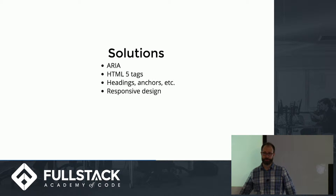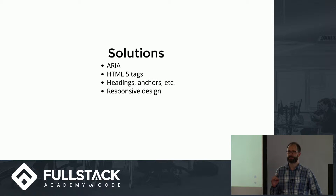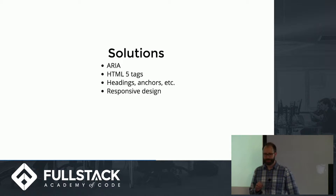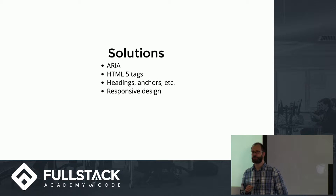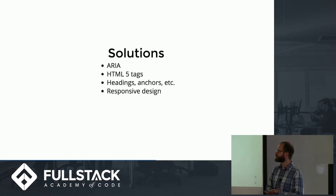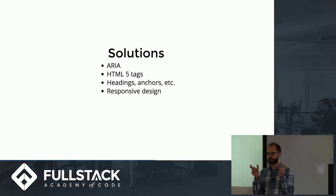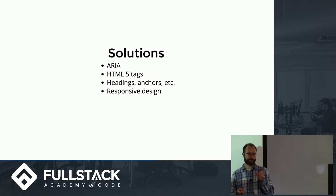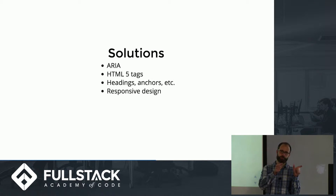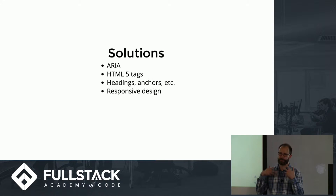Here are some solutions. One is called ARIA — Accessible Rich Internet Applications. This is a specification that describes how to make regular web elements more accessible. In practice, you attach attributes to your elements. For example, you can add an attribute to an input field that tells the user what to fill in, or add a label to a button that tells the user what happens when they click it.